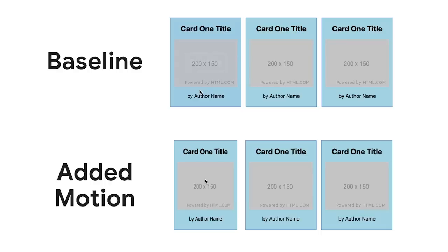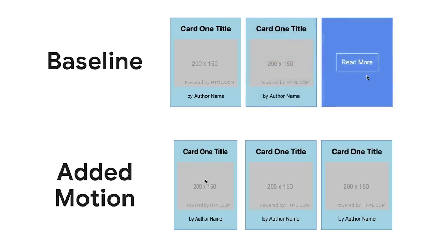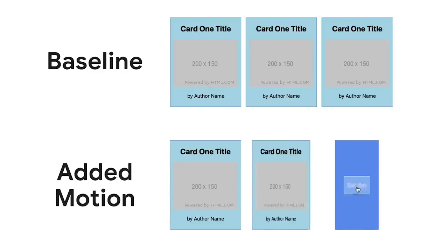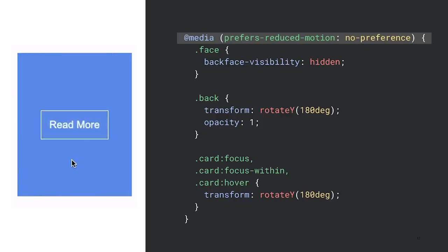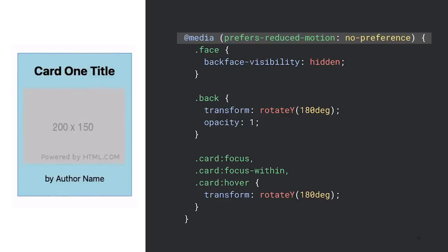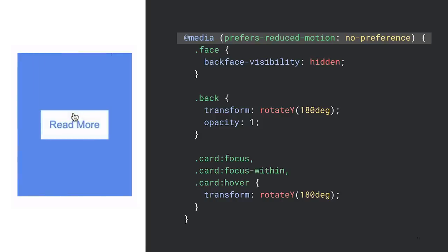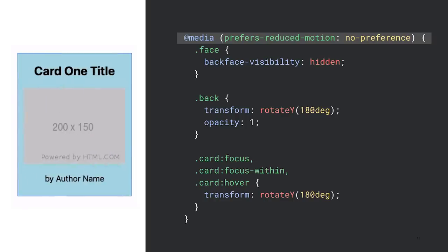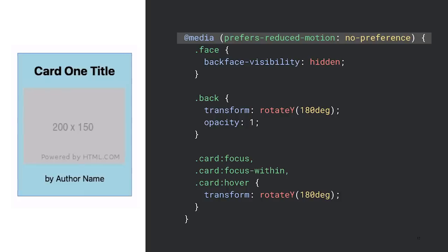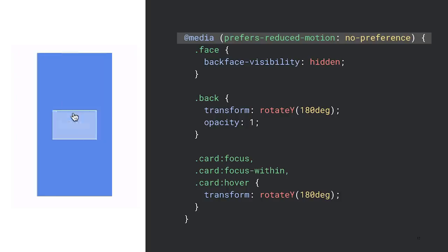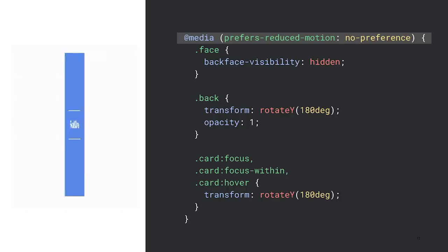Here we have a card with information on both sides. The baseline reduced motion experience is a crossfade to show the information on the back side, while the motion-enhanced experience is a card flip. Prefers-reduced-motion shouldn't mean no motion, since motion is so critical to conveying information online. Instead, make sure to provide some solid baseline experience that guides your user and progressively enhance that user experience for those without accessibility needs or preferences.